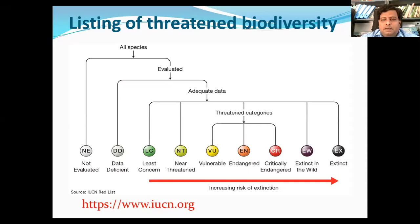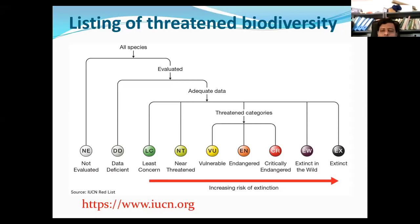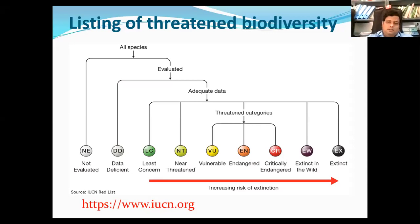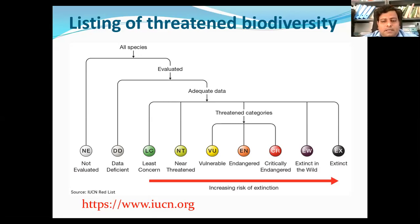The assessment system, established in 1994, contains explicit criteria and categories to classify the conservation status of individual species on the basis of their probability of extinction. The IUCN system uses a set of five quantitative criteria to assess the extinction risk of a given species.